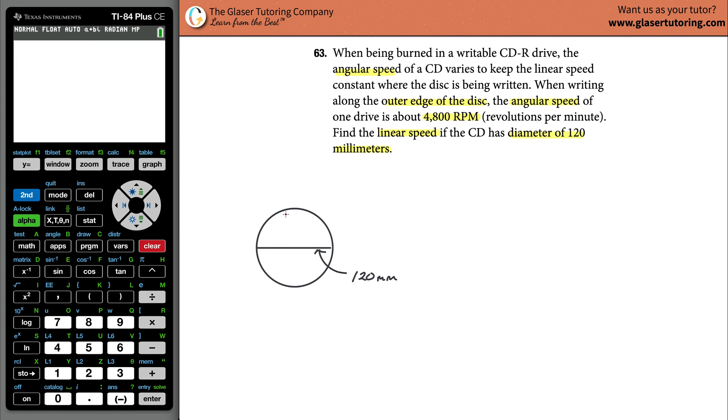Now imagine you are on the edge of this disc, and pretend the disc rotates around one time, meaning it makes one revolution. The question I have for you is: How far would you have traveled? In other words, how far did this dot actually move? What's the linear distance? Well, what's the length of this outside part of a circle called? That's a circumference, right? So to find the circumference, we could use our formula.